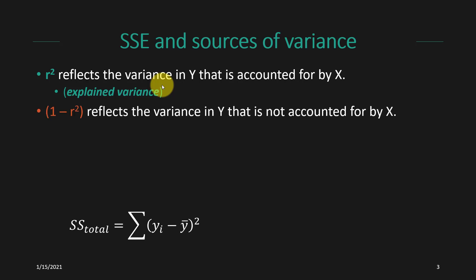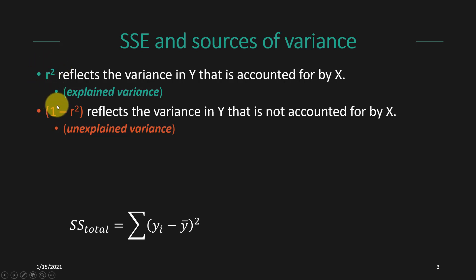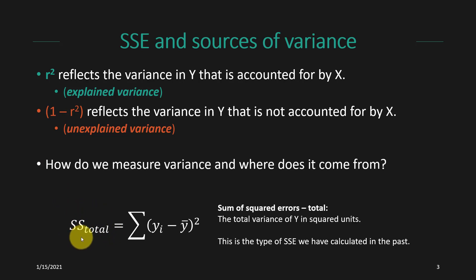If you're thinking ahead a little bit, you might already be thinking about what's left unexplained by x. The idea is that 1 minus r-squared would represent the unexplained variance, because there's some total amount of variation in y — the total sum of squared errors. We're going to explain a proportion of it, reflected in the r-squared, and then any part of it that is unexplained would be the difference between 100% and the part that's explained. So to get at the unexplained variance we just do 1 minus r-squared, and that tells us the proportion of the sum of squared errors that remains unexplained by the x variable.